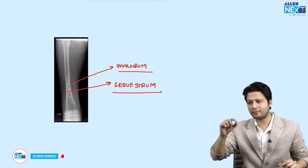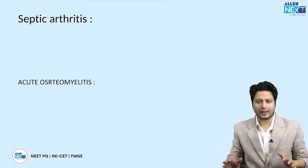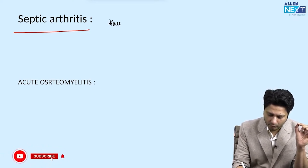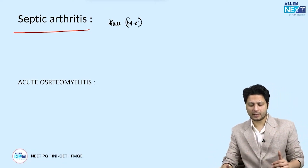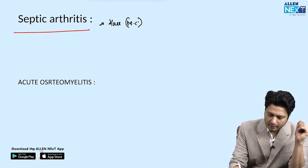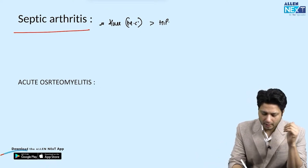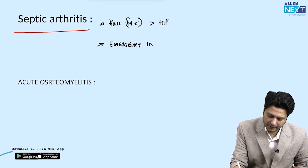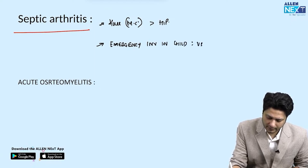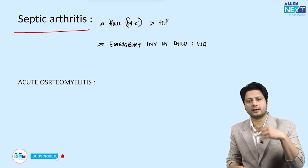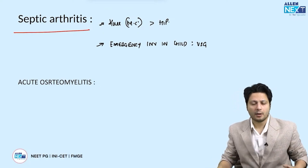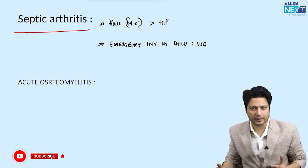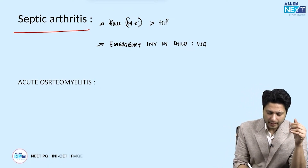For septic arthritis — joint infection — the most common site is the knee joint, and the hip is the second most common site. An important point: the emergency investigation in a child with suspected septic arthritis is ultrasonography. While MRI is the investigation of choice, ultrasonography is considered the better fast emergency investigation, especially for the hip joint in children.